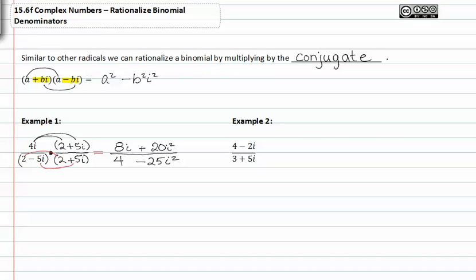Now that we've done that we can simplify. We get eight i plus twenty times negative one all over four minus twenty five times negative one.